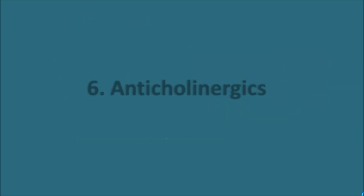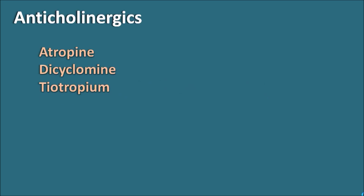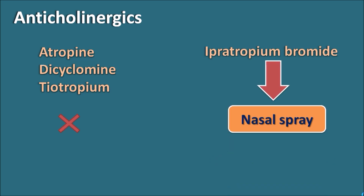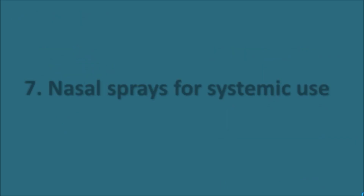The sixth category is anticholinergics. Many anticholinergic drugs exist, such as atropine, dicyclomine, and tiotropium, but these are not given by the nasal route. The only anticholinergic drug given as a nasal spray is ipratropium bromide. It acts as a bronchodilator and also inhibits nasal secretions, making it useful for conditions like allergic rhinitis to reduce runny nose.